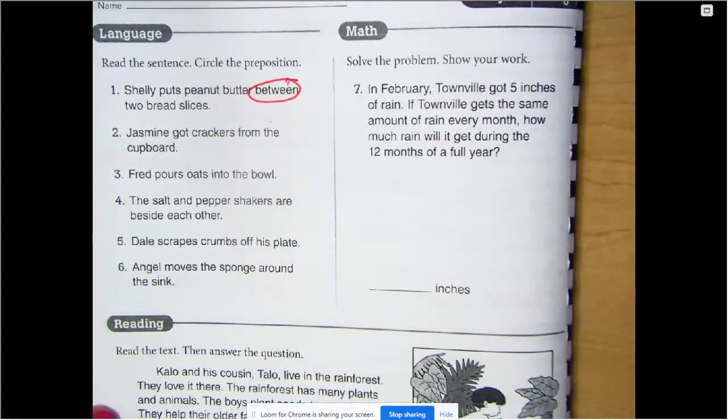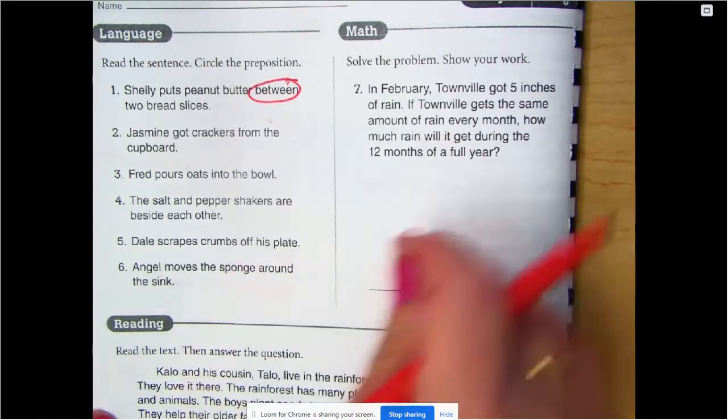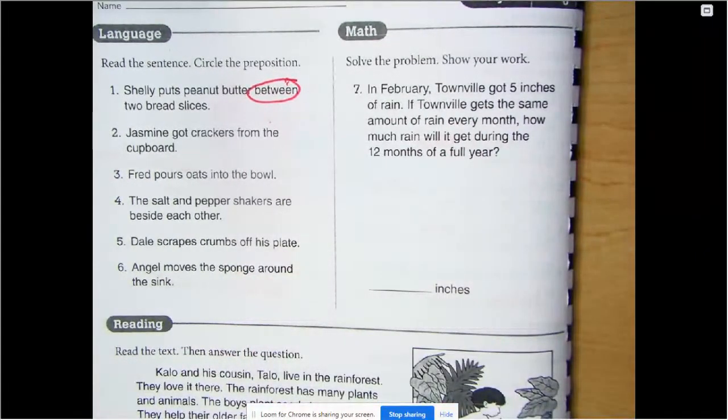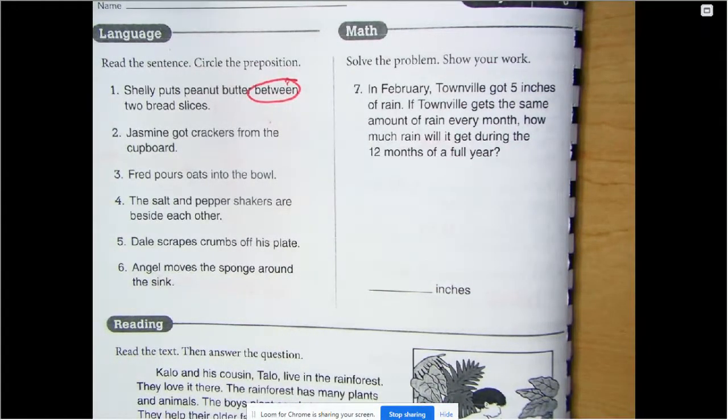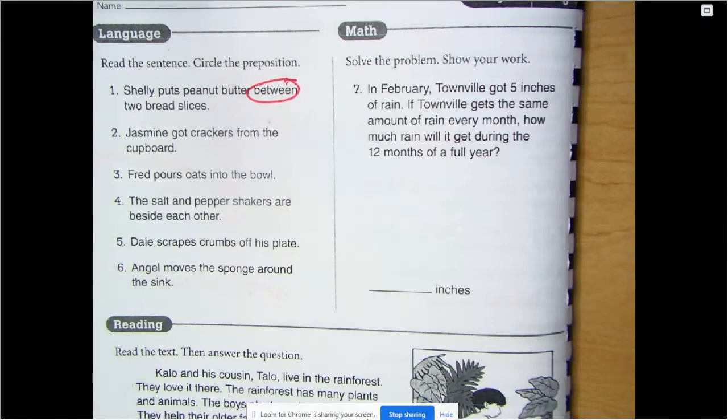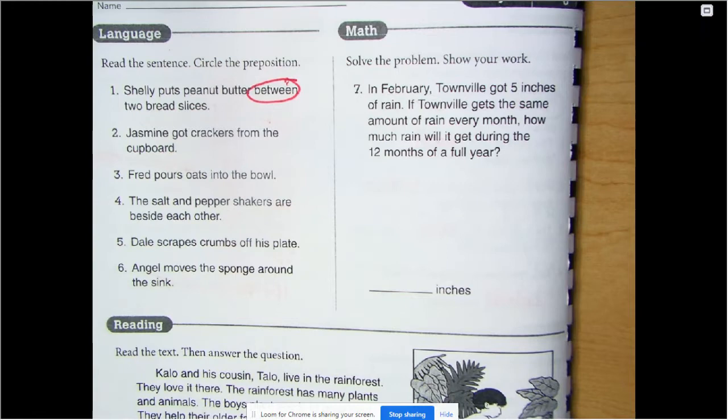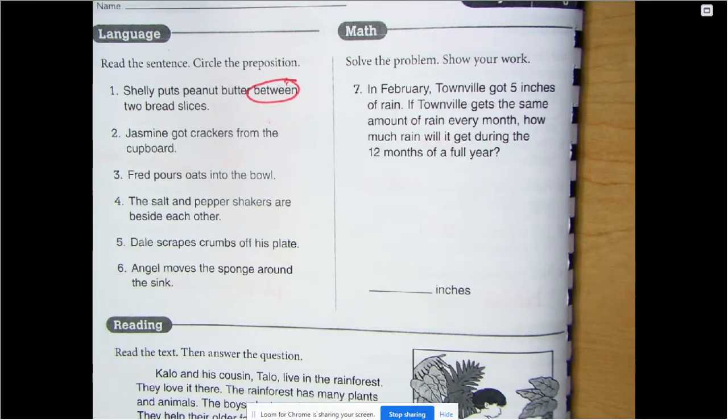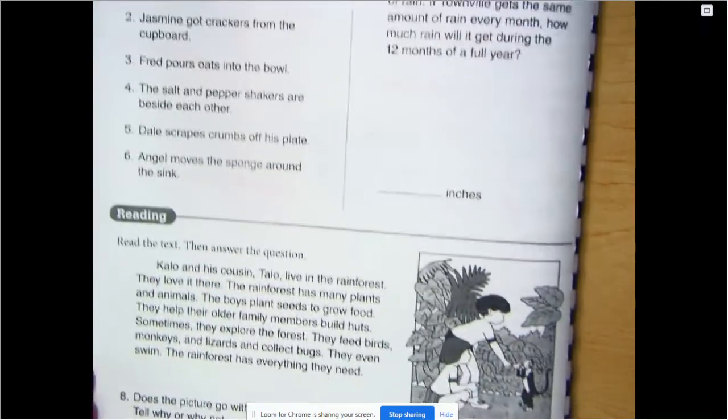Number seven, solve the problem, show your work. In February, Townsville got five inches of rain. If Townsville gets the same amount of rain every month, how much rain will it get during 12 months of a full year? So every month they've gotten five inches of rain in February. If they got five inches of rain in every single month for an entire year, how much rain would that be? How many inches of rain? Show your work on this spot right here.